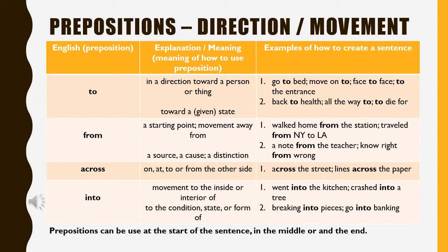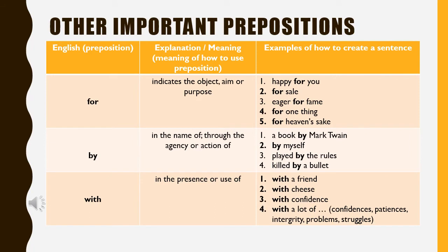A preposition can be used at the start of a sentence, in the middle, or at the end. Moving on to other important prepositions: preposition 'for' is used to indicate the object, aim, or purpose — examples: happy for you, for sale, eager for them, for one thing, for heaven's sake.